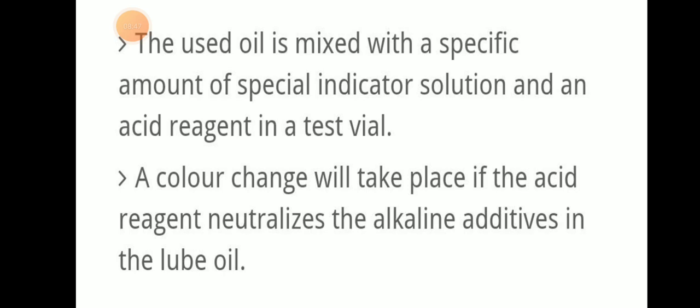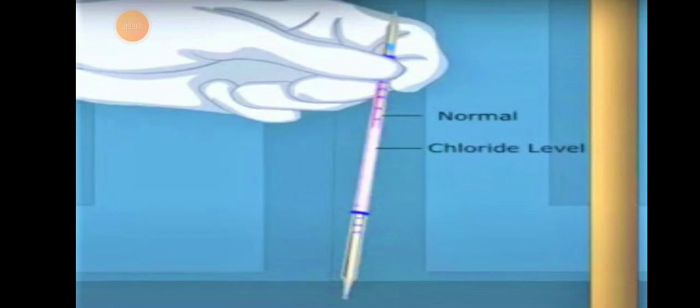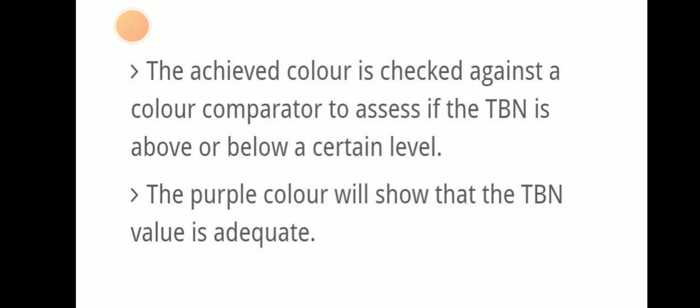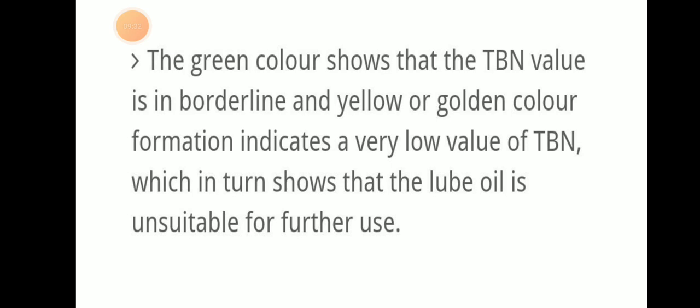In the alkalinity test, the used oil is mixed with a specific amount of special indicator solution and acid reagent in a test vial. A colour change takes place if the acid reagent neutralizes the alkaline additives in the lube oil. The achieved colour is checked against a colour comparator — purple means TBN is adequate, green means borderline, and yellow or gold means the TBN is very low, indicating the lube oil is unsuitable for further use and must be changed.